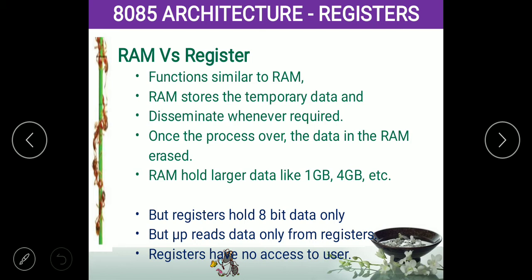The difference is that a register can hold 8-bit data — that is 8 binary elements — whereas RAM can hold any amount of data, from 1 GB to 64 GB. Another difference is that the processor accesses data only from the register and not directly from RAM. Similarly, external users or peripheral devices can access RAM directly, but cannot access the register directly.